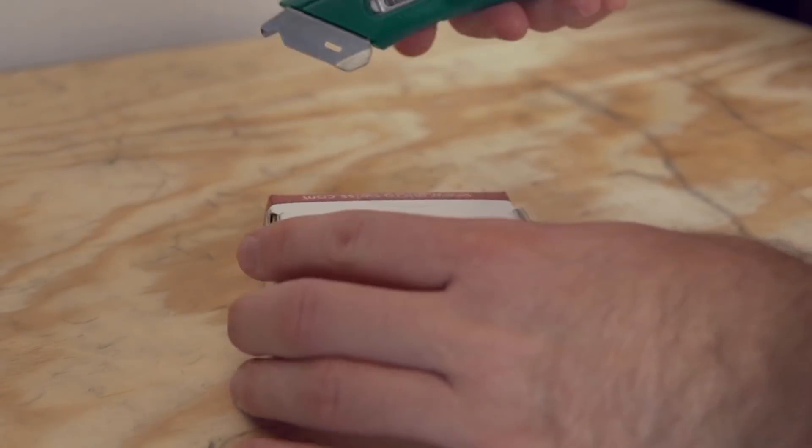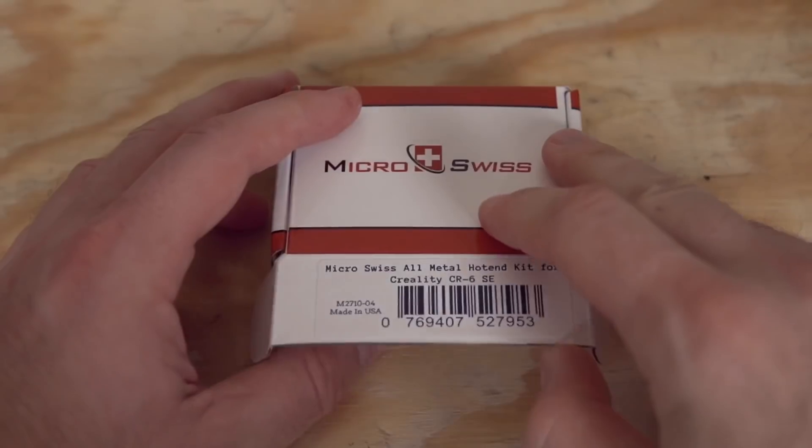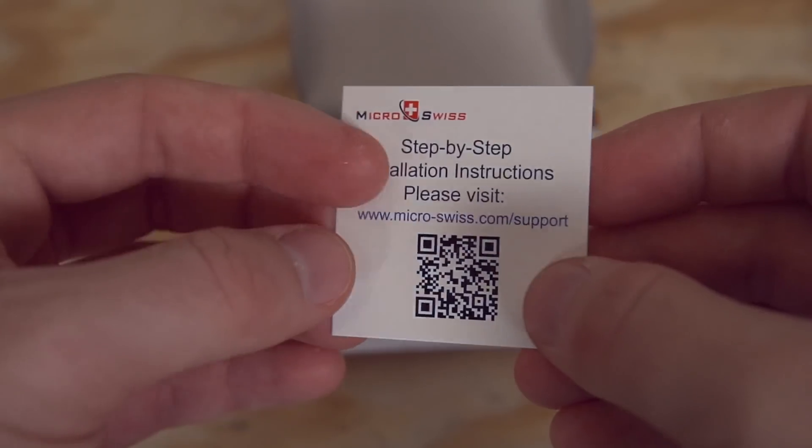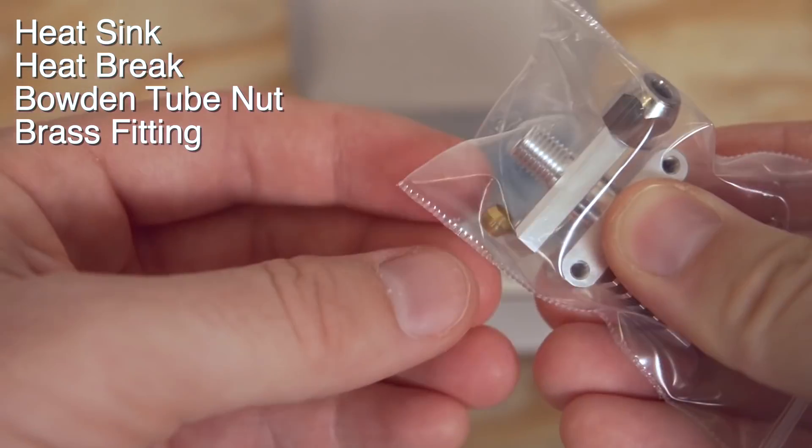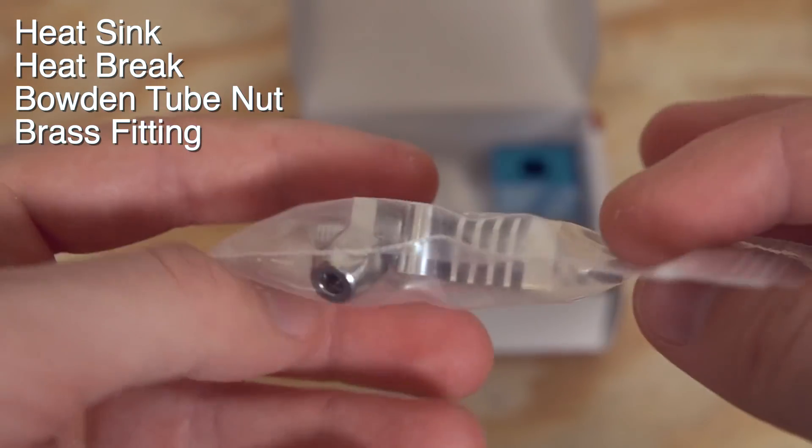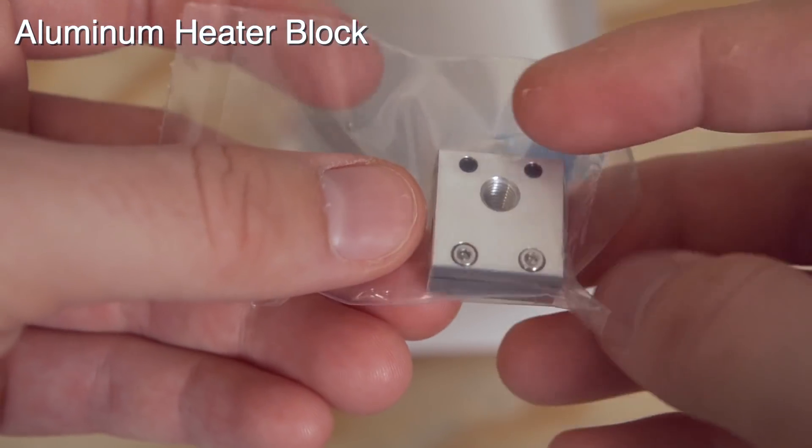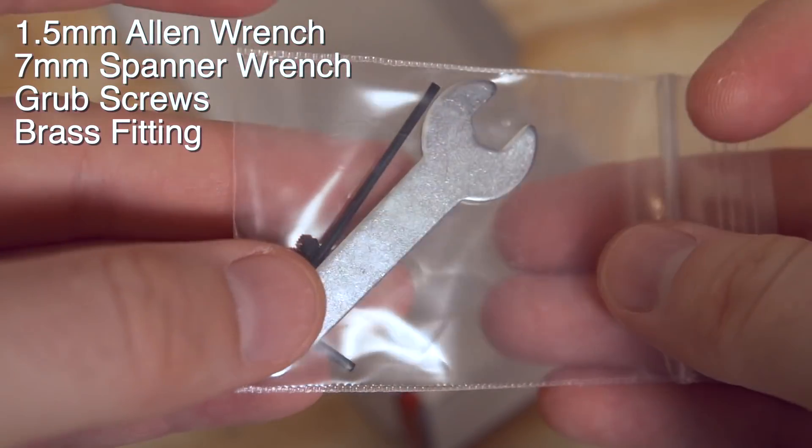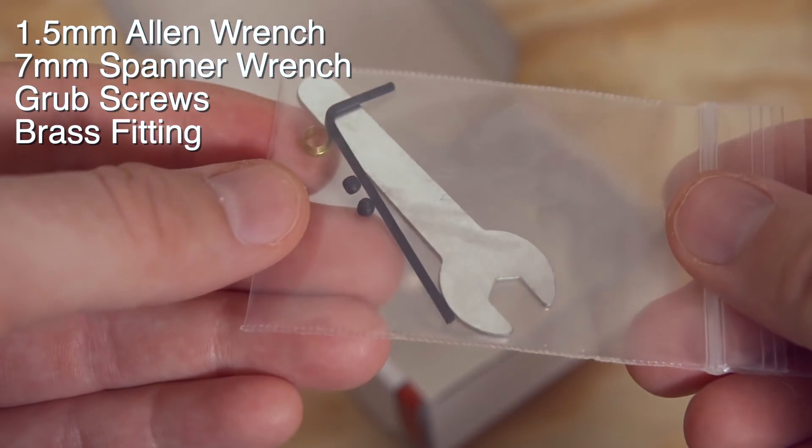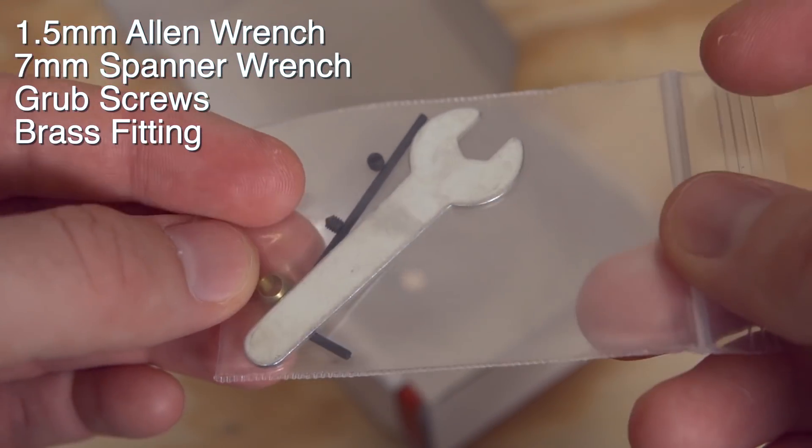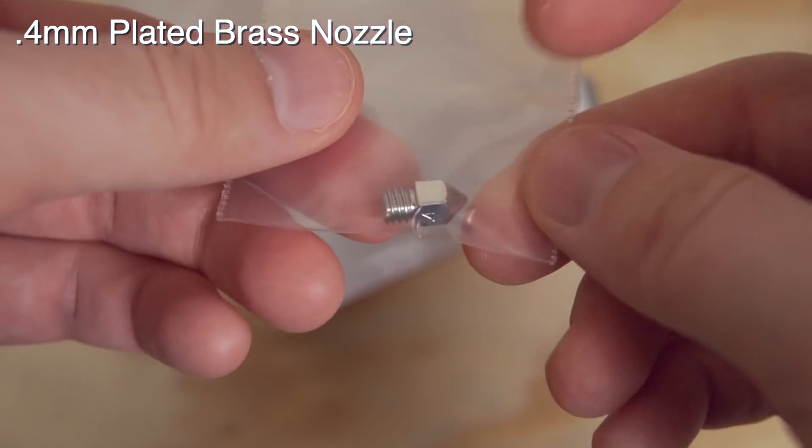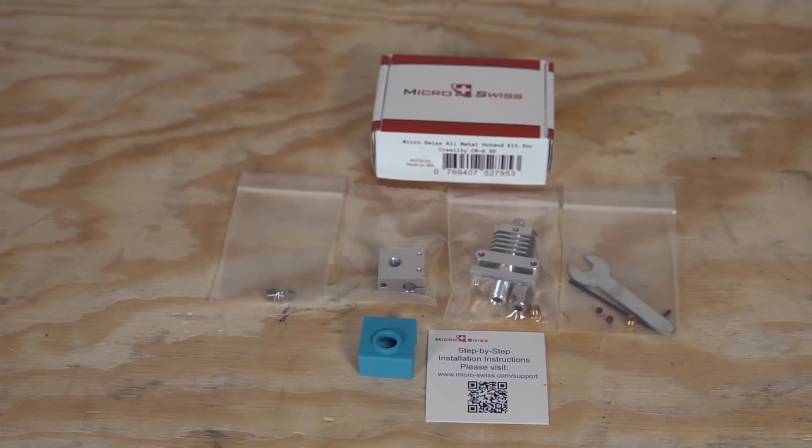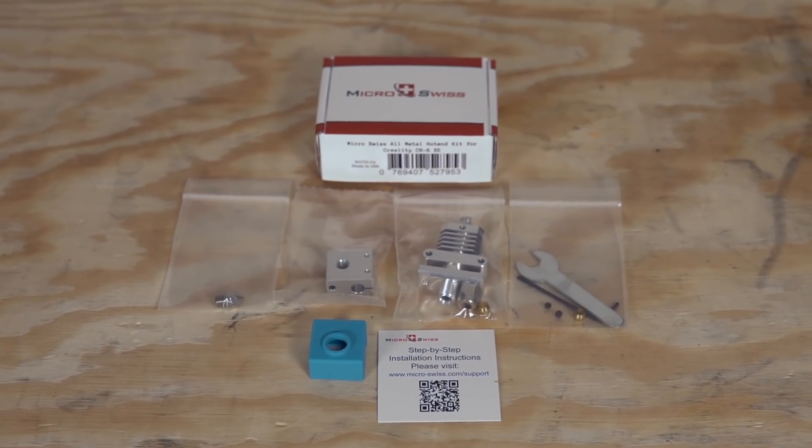All right, before we jump into the install, let's go through all the things that should be included with your CR6SE all-metal hotend. Inside the box, you'll find a card with a QR code for MicroSwiss's support, should you need it. There is a bag that has the heat sink, heat break, Bowden tube nut, as well as the brass fitting for that Bowden tube. You'll find your new aluminum heater block, the silicone sock for that new hotend, a bag of tools that has a 1.5mm Allen wrench, a 7mm spanner wrench, two grub screws (one is extra), and an extra brass fitting, and last but not least, a .4mm plated brass nozzle. This is everything that should be included. If you are missing anything, make sure to reach out to MicroSwiss before disassembling your hotend and trying to install this.